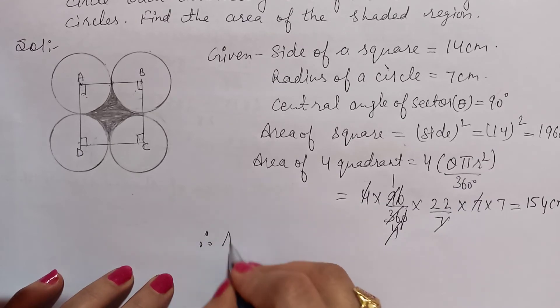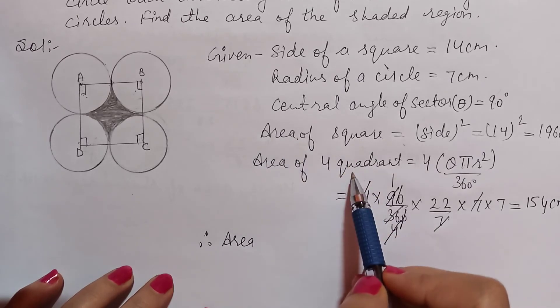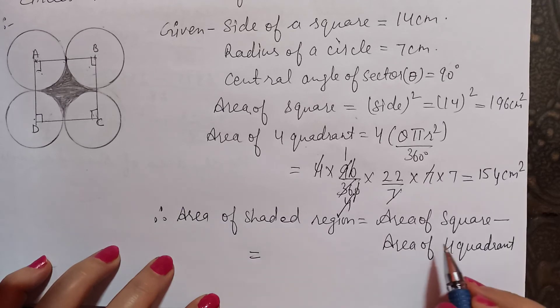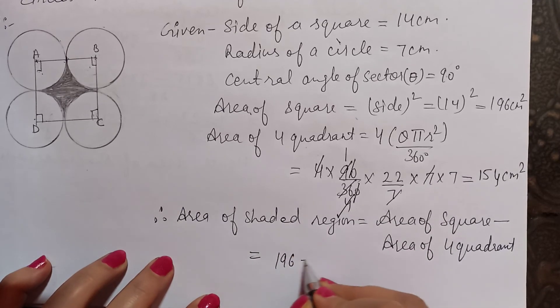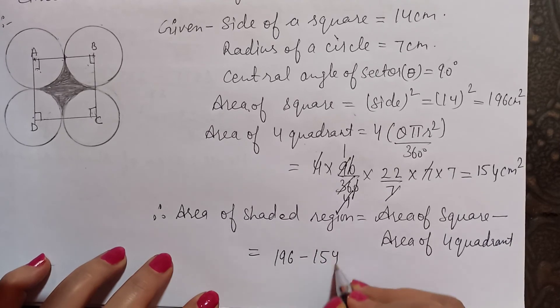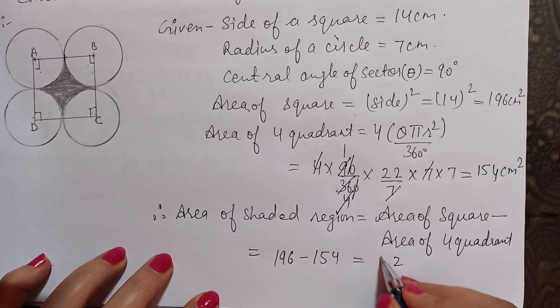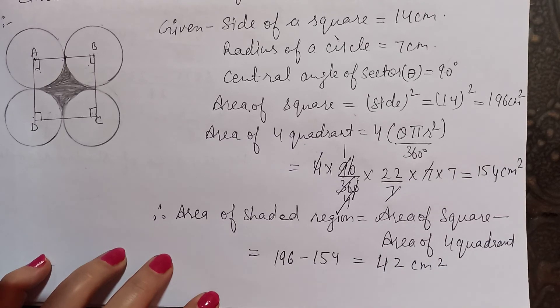Therefore, area of shaded region is equal to area of square minus area of 4 quadrants. Square area is 196, quadrant area is 154. So 196 minus 154 equals 42 cm squared. Thank you.